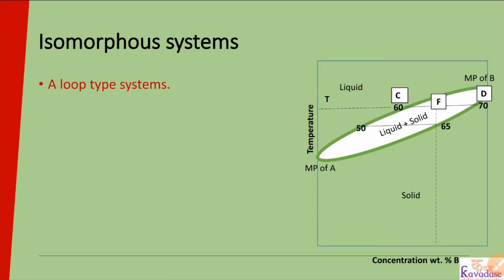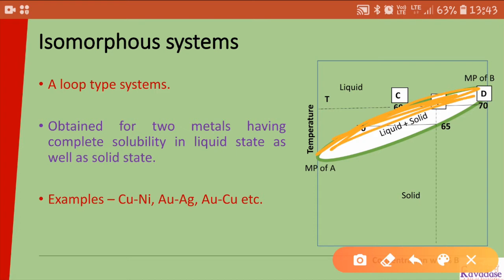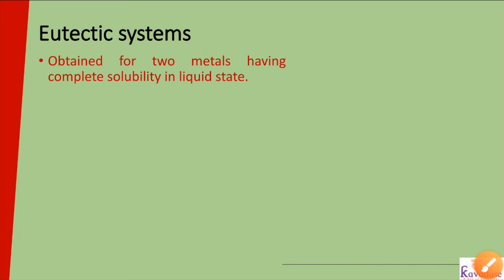The first one, isomorphous, is also known as the loop type of system because a loop formation takes place in the diagram. We have seen the example of the isomorphous system — copper and nickel — in a previous lecture, where we drew multiple cooling curves, joined their solidification start and end points, and obtained this isomorphous type of system.